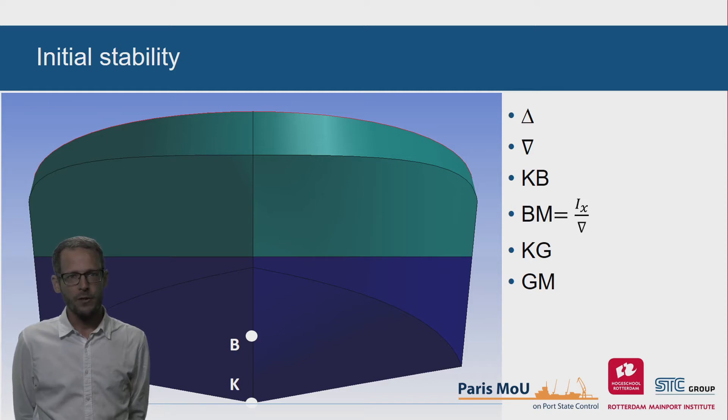For the initial stability, the displacement caused by the current volume of the hull is important in combination with the distances KB, BM, KG and GM. The distance KB depends on the form and volume of the underwater hull and can be found in a stability booklet in the hydrotables.